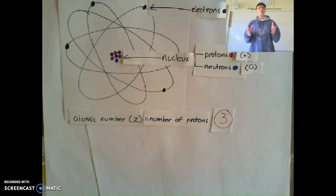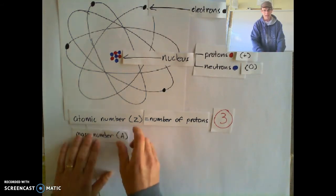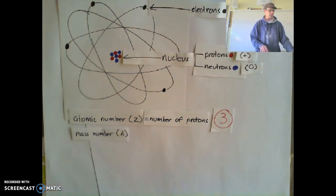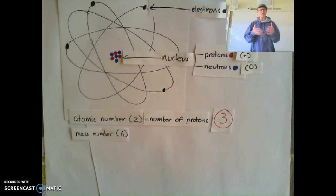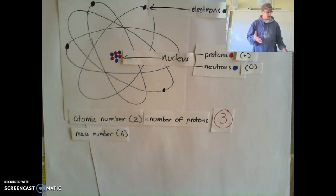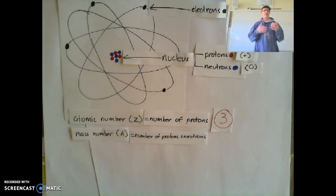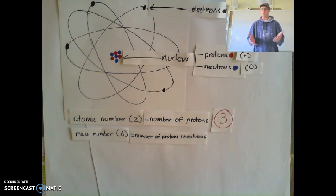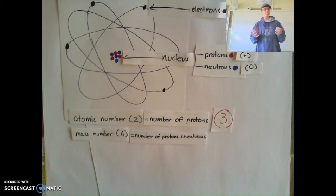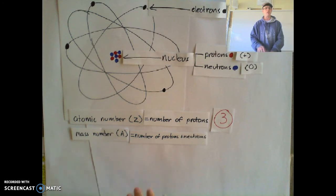The next important characteristic of an atom is the mass number, and the mass number is often represented by a capital A. Now people always get confused about the mass number, because the mass number is the number of protons and neutrons. People get confused because the atomic number is the number of protons, and they want the mass number to be the number of neutrons — but it's not. The mass number is the number of neutrons and protons inside the nucleus of an atom.